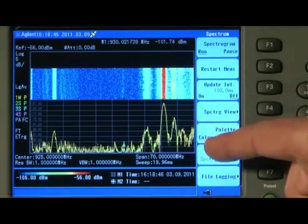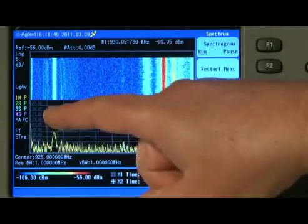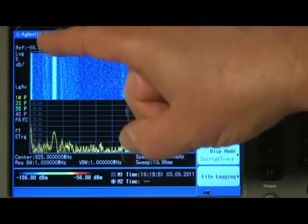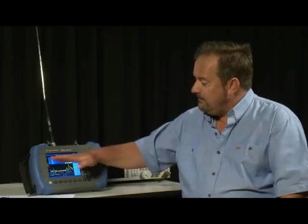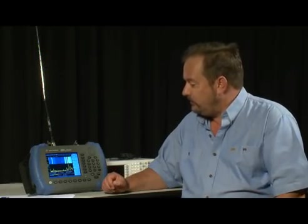On the x-axis, we still have frequency displayed, but on the y-axis, instead of displaying amplitude in dBm, we now have time. So, each series, each trace is layered or stacked one above the other, giving us a historical record of all the previous spectrum traces.